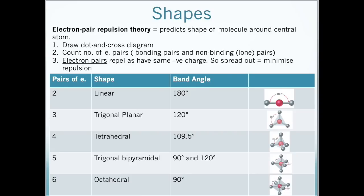If you have two pairs of electrons the shape will be linear, bond angle will be 180 degrees as shown here around the central atom. If we have three pairs of electrons the shape will be trigonal planar, the bond angle will be 120 degrees as shown here.